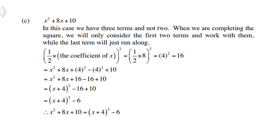Let's look at c now. So, x squared plus 8x plus 10. In this case, we have three terms, and not two terms. When we are completing the square, we will only consider the first two terms and work for them. While the last term will just run along. So, remember, you must first put 10 one side, but don't throw it away, you need to add 10. So, we are only going to look at x squared plus 8x, and complete the square. So, half times 8, all squared, gives you 16. So, you add 4 squared, and subtract 4 squared. But don't remember, there is still plus 10. Then the first three terms will be x plus 4 squared. And now, we can say negative 16 plus 10, which is negative 6.